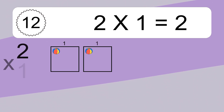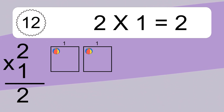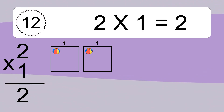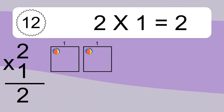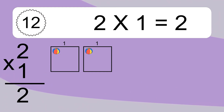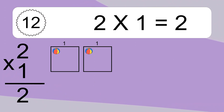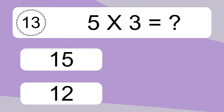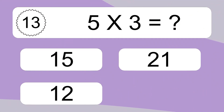2 times 5 equals what? We have 2 boxes and each box has 1 colorful ball inside. If you count all the balls in all the boxes together, you will have 2 times 1 balls. This equals 2 balls.